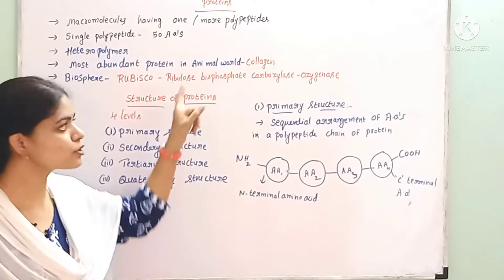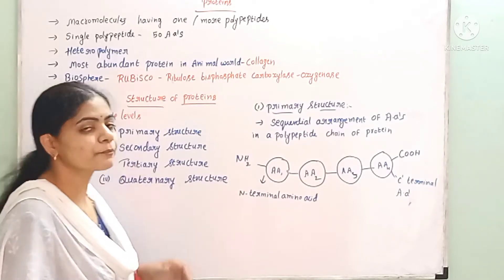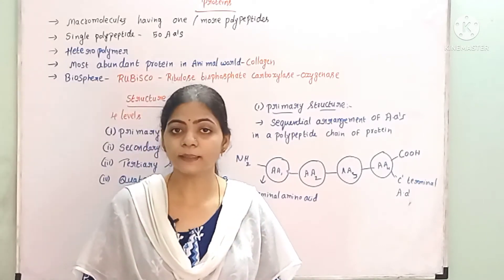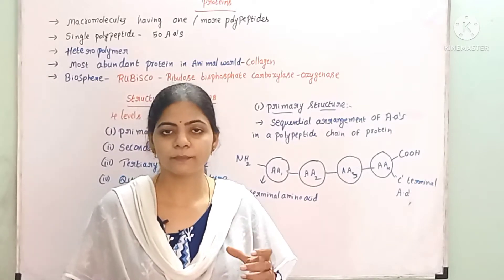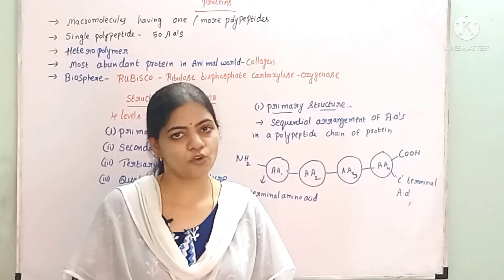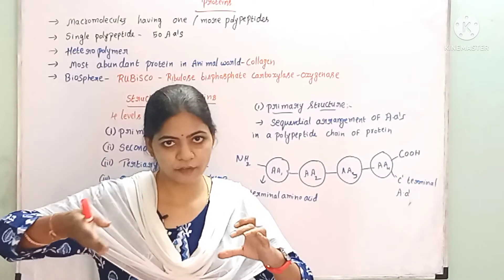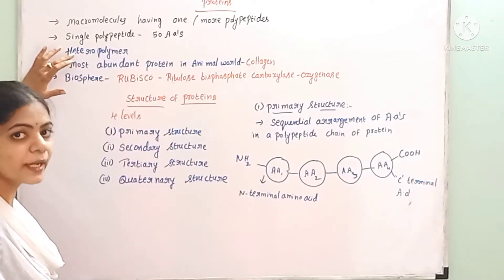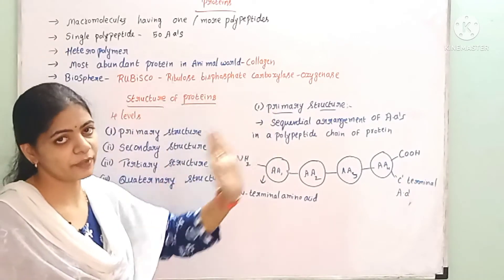A single polypeptide consists of nearly 50 amino acids. These proteins are called heteropolymers. If a polypeptide chain is formed by the same type of amino acids repeated n number of times, that is called a homopolymer. But if a polypeptide chain is formed by different types of amino acids, that is called a heteropolymer. The protein is only a heteropolymer, not a homopolymer — it is made up of different types of amino acids.